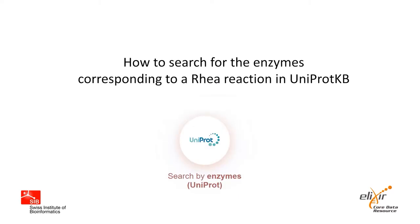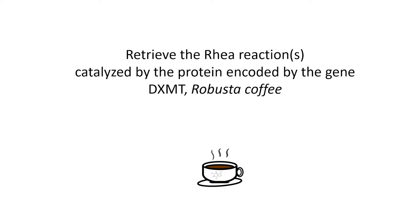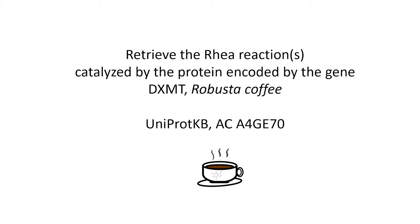In this tutorial we will learn how to search for the enzymes corresponding to a RHEA reaction in the UniProt knowledge base. As an example we will take the protein encoded by the gene DXMT of the Robusta coffee plant, which can be found in the UniProt KB SwissProt record with the accession number A4GE70.